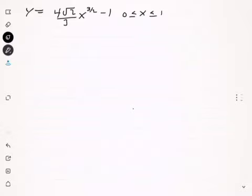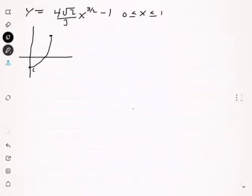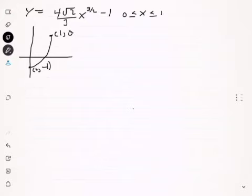I'm going to graph the function right here. Here is the point (0, -1) — you can get it by putting zero into the function. And then over here we're going to put x equals 1, which gives approximately 0.81 for the y value.